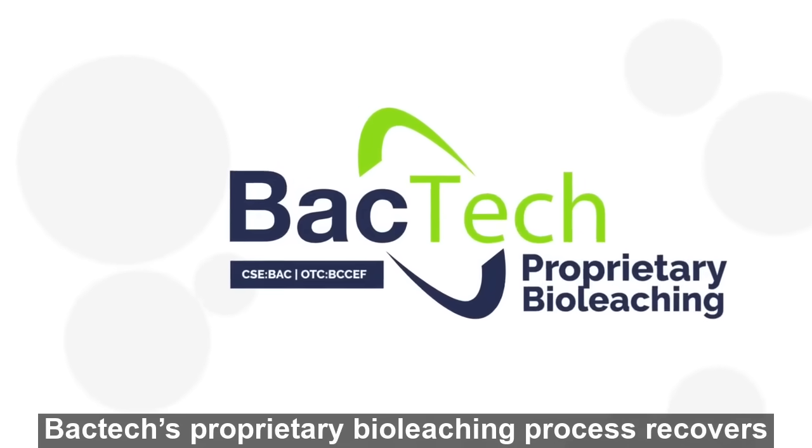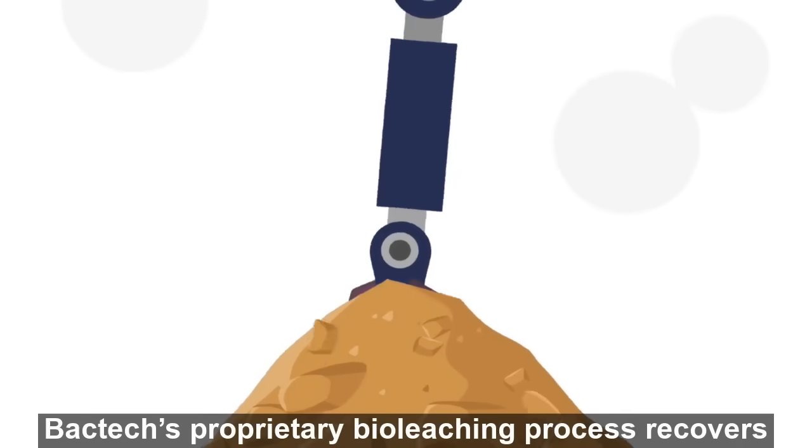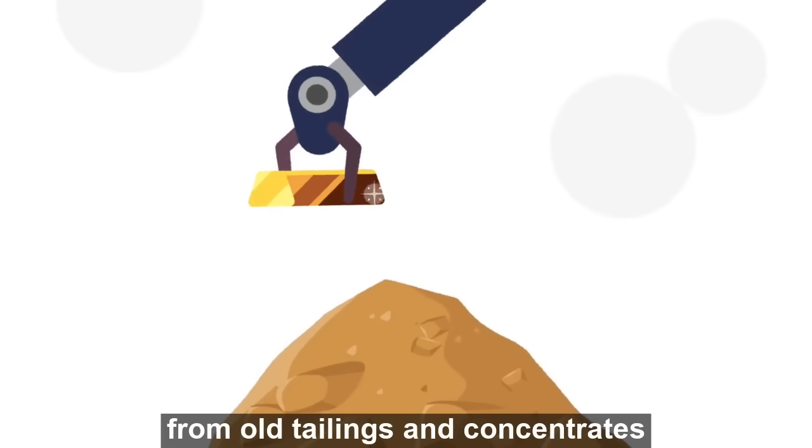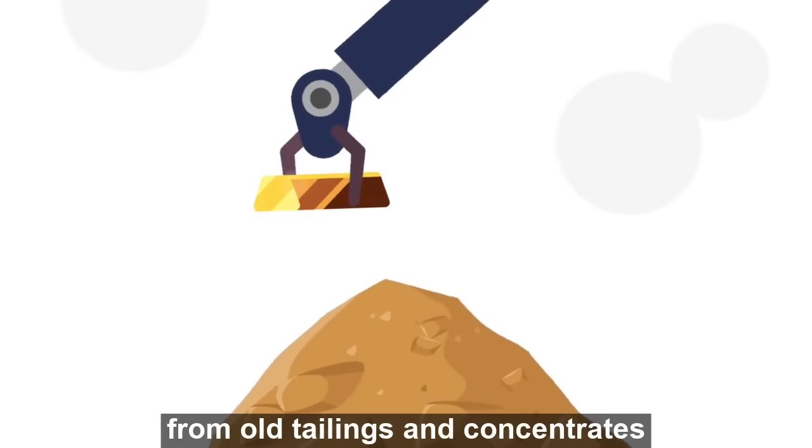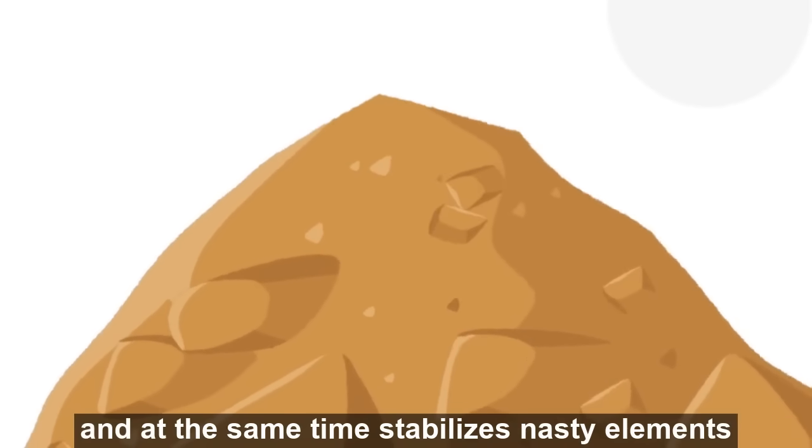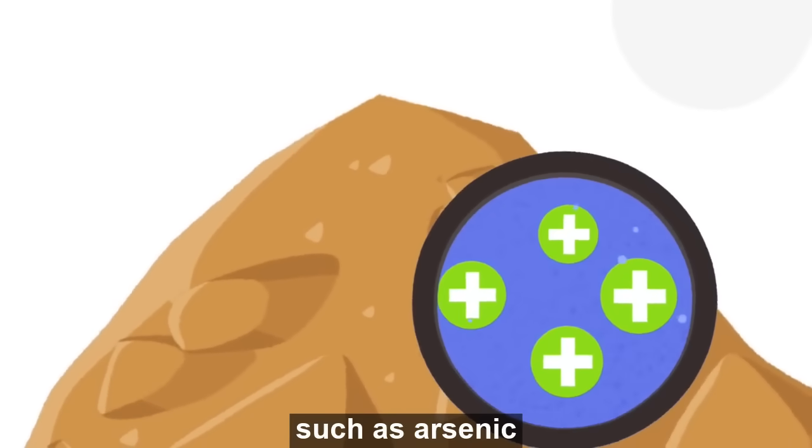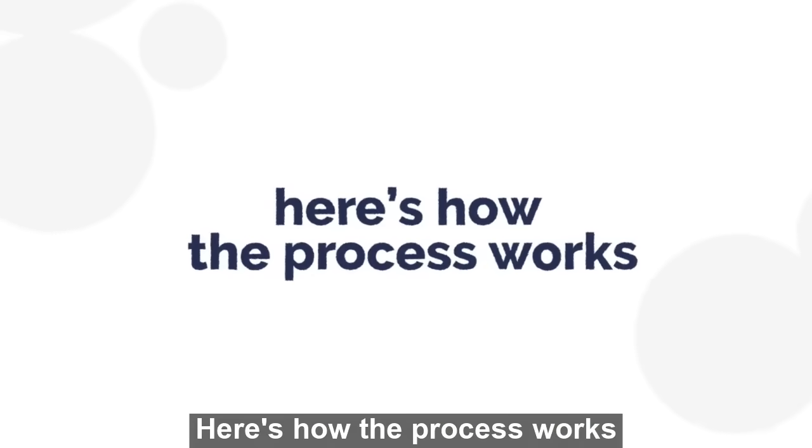Backtech's proprietary bio-leaching process recovers valuable metals such as gold from old tailings and concentrates and at the same time stabilizes nasty elements such as arsenic. Here's how the process works.